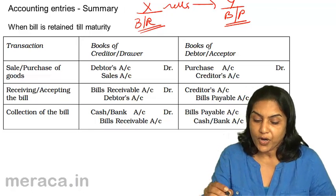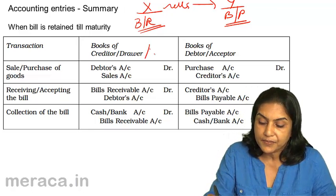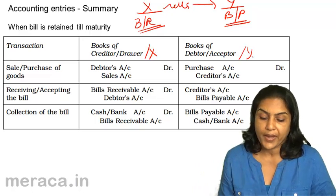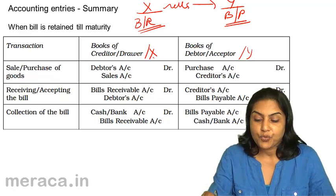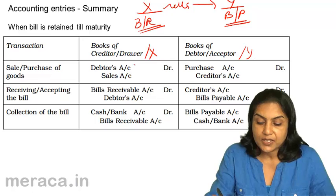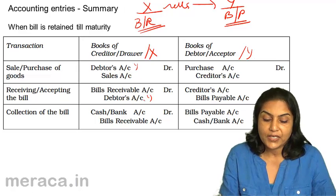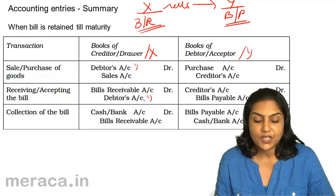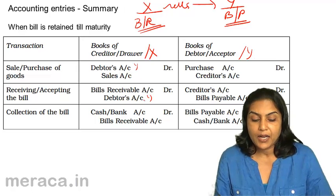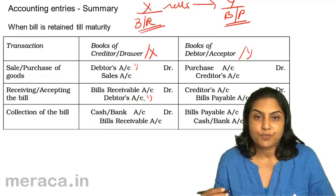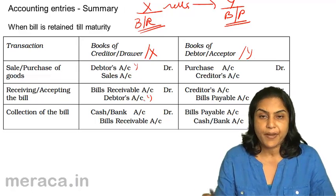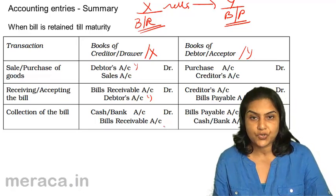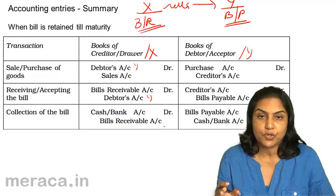What are the entries in the books of X? On sale of goods, it would be Y's account debit to sales. Bills receivable account debit to Y's account when he receives the bill of exchange. And when the bill is collected and money is received, the entry would be cash or bank account debit to bills receivable. These would be the entries in the books of X.